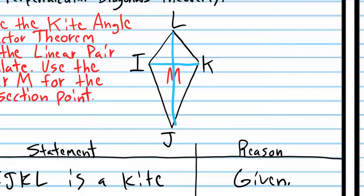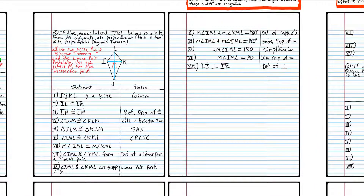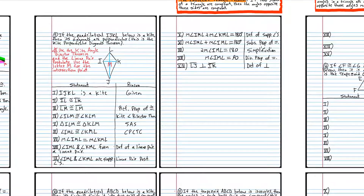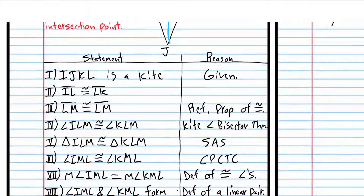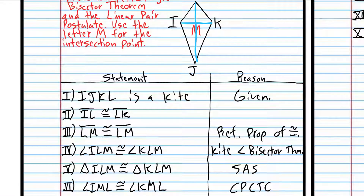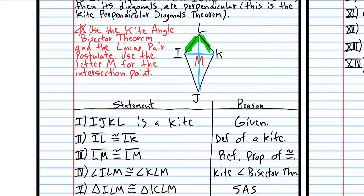Now that the measure of that angle is 90, we know LJ is perpendicular to IK — definition of perpendicular. To do a complete proof you could try to prove that all of these angles are 90, but it's not really necessary — if we prove one is 90, it's fairly obvious they'll all be 90. Also, I forgot to write: the definition of congruent angles, and the definition of a kite — that's how we know those two sides are congruent.